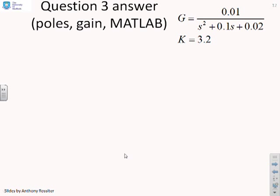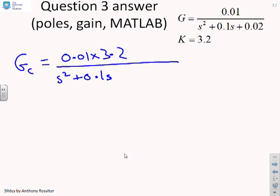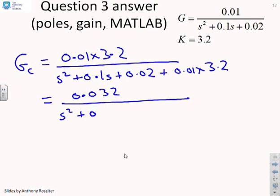So first, let's go and write the closed loop transfer function. So GC equals 0.01 times 3.2 over s squared plus 0.1s plus 0.02 plus 0.01 times 3.2. And now I can simplify that to get 0.032 divided by s squared plus 0.1s plus 0.052.